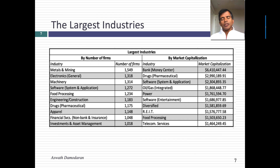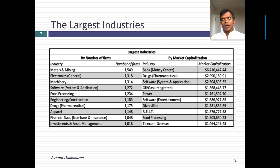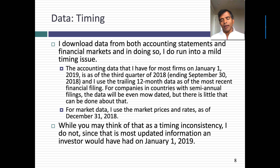The largest industries, both in terms of number of firms and market cap, are captured in this table. Metals and mining is the largest single sector in terms of number of companies — almost 1,500 companies. Banks are the largest grouping in terms of market cap. These are money center banks. This is basically a listing of the 10 largest industries by both dimensions.